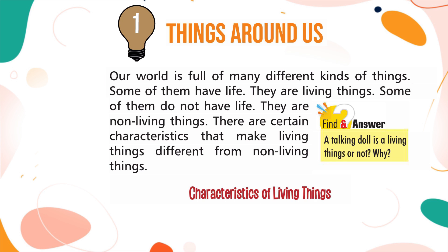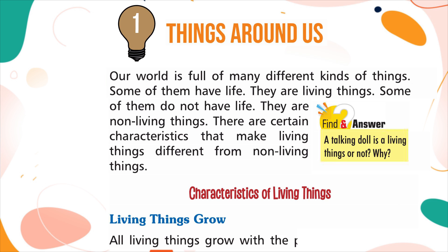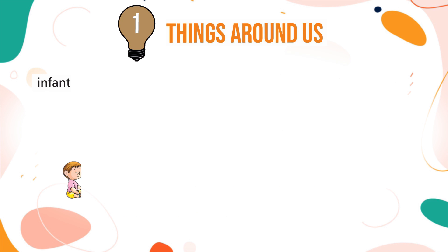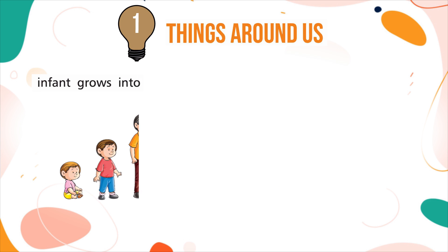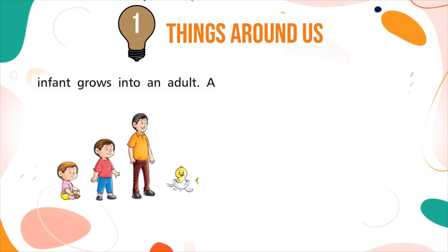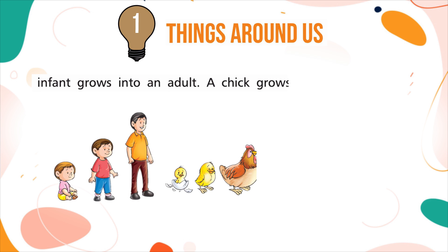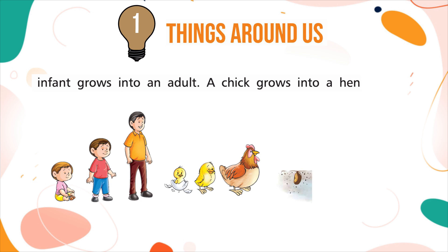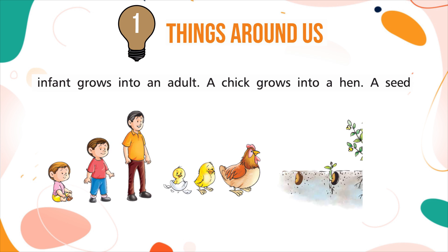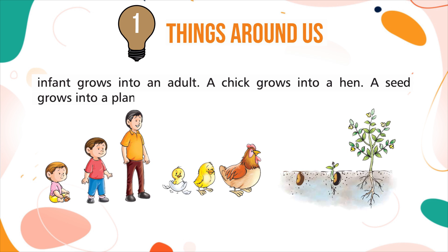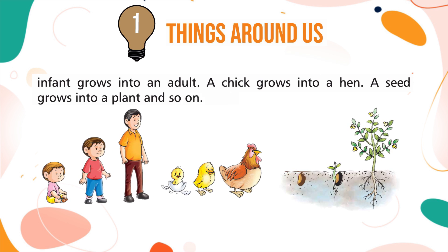Characteristics of Living Things. Living things grow. All living things grow with the passage of time. An infant grows into an adult, a chick grows into a hen, and a seed grows into a plant.